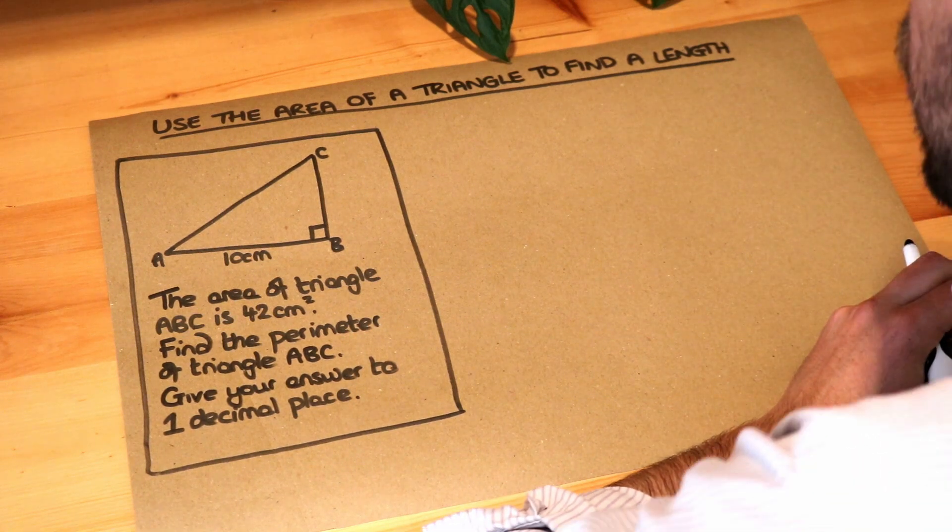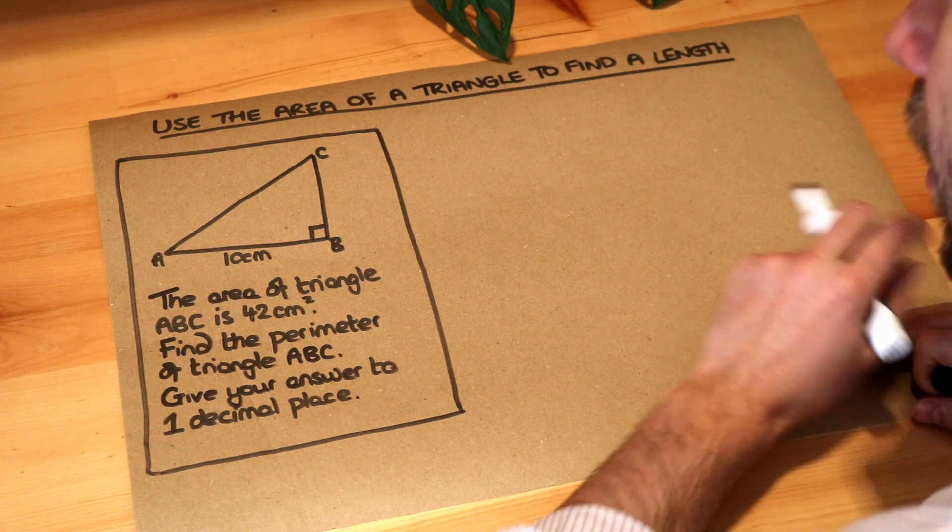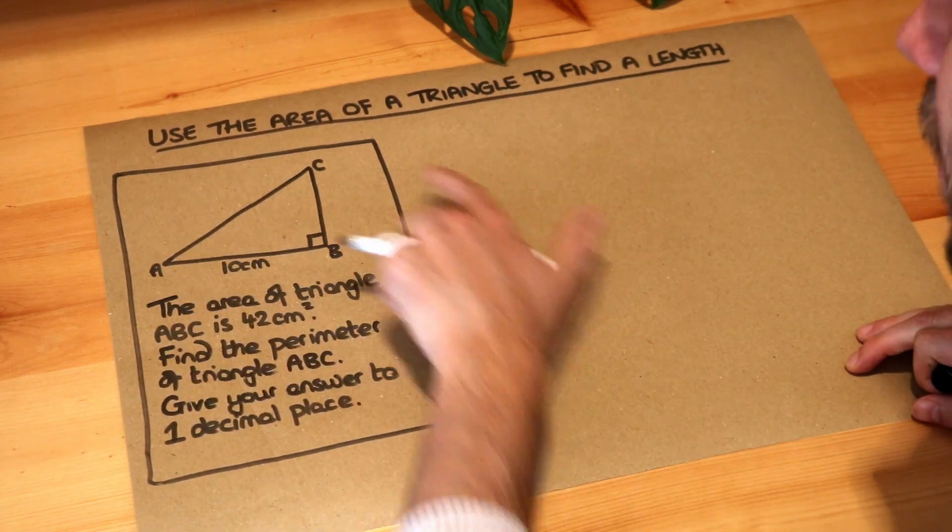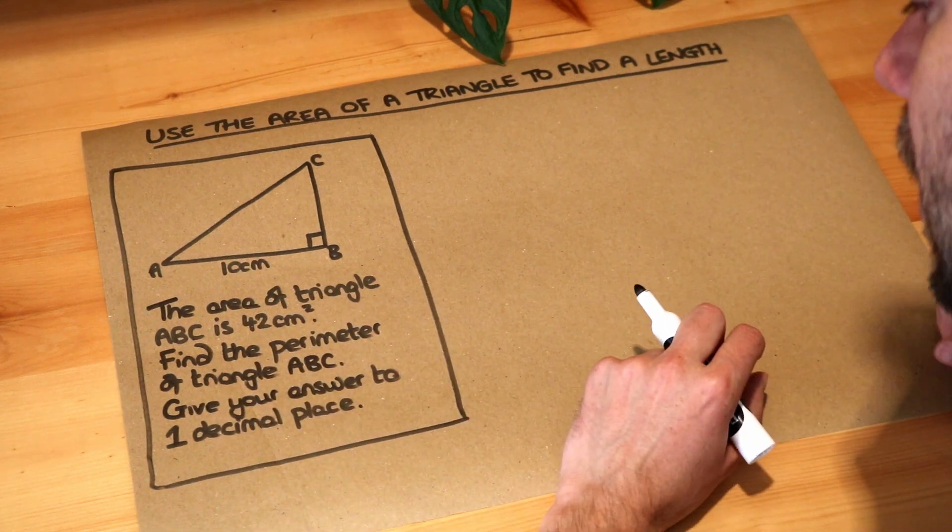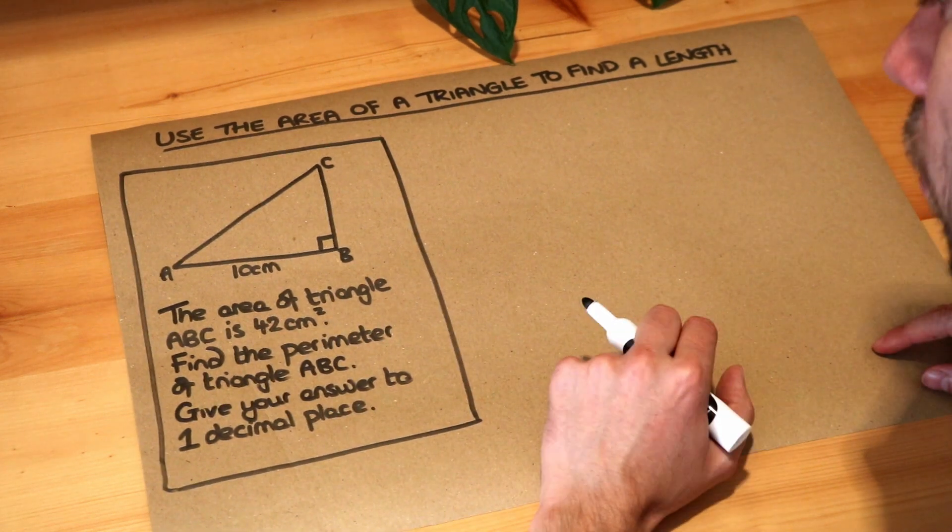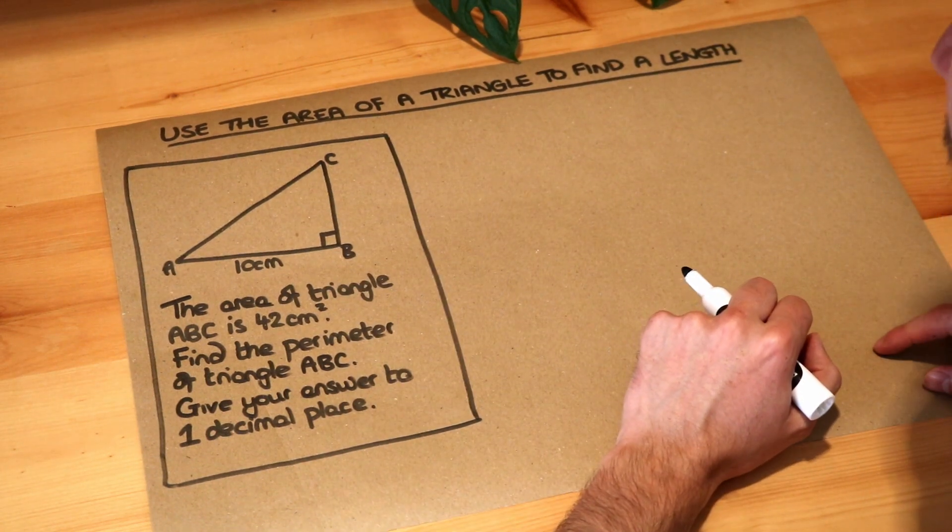Hello and welcome to this Dr Frost video on using the area of a triangle to find a length. So we've got this triangle here, ABC. The area of triangle ABC is 42 centimetres squared. Find the perimeter of this triangle ABC. Give your answer to one decimal place.